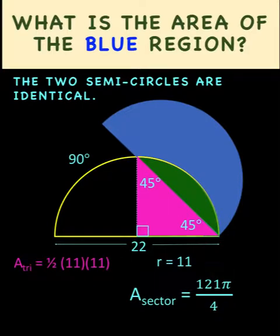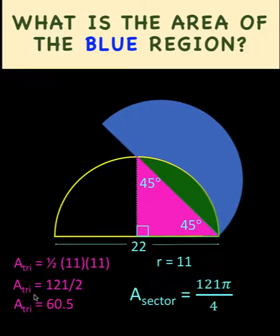Simplifying, we get 121 over 2, or 60.5 units. Now that we know what is the area of the quarter circle and what is the area of this pink triangle, then we can now calculate the area of this green shaded region. So the area of the green shaded region must be the difference between this area of the sector and the area of the pink triangle.